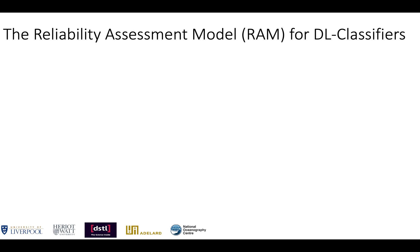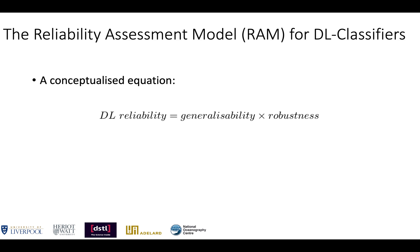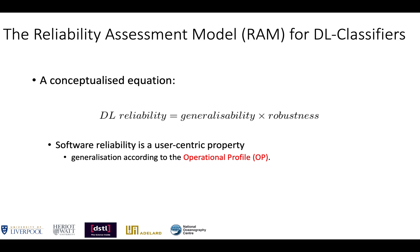The reliability model for deep learning classifiers essentially implements a conceptualized equation: deep learning reliability should be the product of its generalizability and robustness. First, software reliability is a user-centric property that depends on how the software will be operated, so in the assessment we need to consider how the deep learning generalizes to a new data point according to the operational profile. Second, deep learning models are subject to robustness issues, so considering robustness evidence in reliability assessment is necessary.